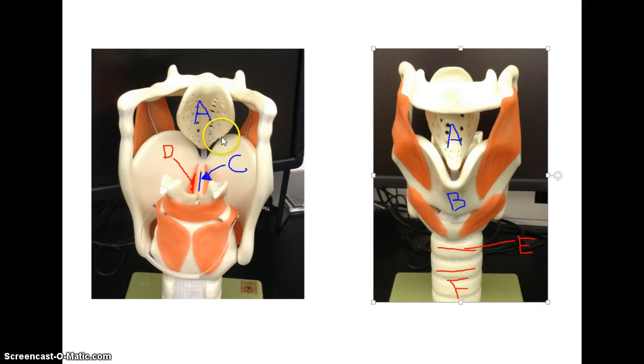Looking at the posterior view, you see the epiglottis here. This opening that would exist between these two vocal folds is called the glottis, and then you have the vocal folds on each side. The epiglottis is going to cover the glottis when you swallow, so the food is forced down the esophagus.